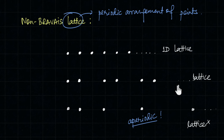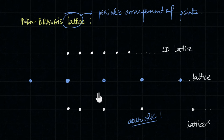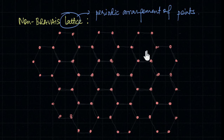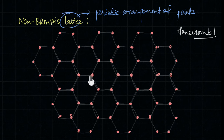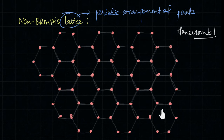Coming back to the second lattice: if we consider only one of the two close points as the lattice point and treat the other as the basis, we are left with an evenly spaced lattice — which, extended infinitely, becomes a Bravais lattice. In other words, a periodic pattern can always be converted into a Bravais lattice. Now consider this arrangement of points that looks like a honeycomb. Is this a Bravais lattice? If we move from one lattice point to another, not all points line up, so it does not have translational symmetry at every lattice point. It is not a Bravais lattice.